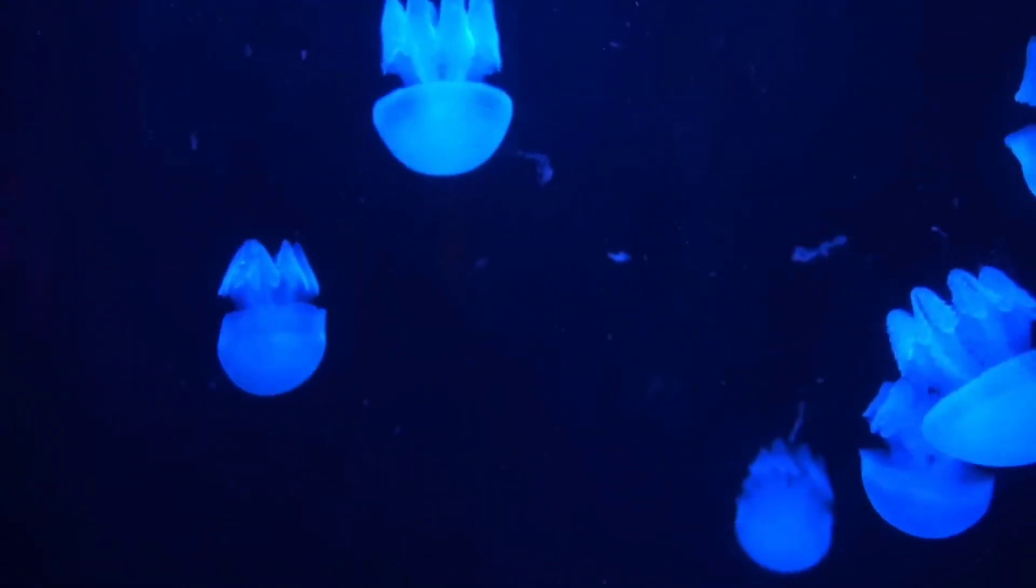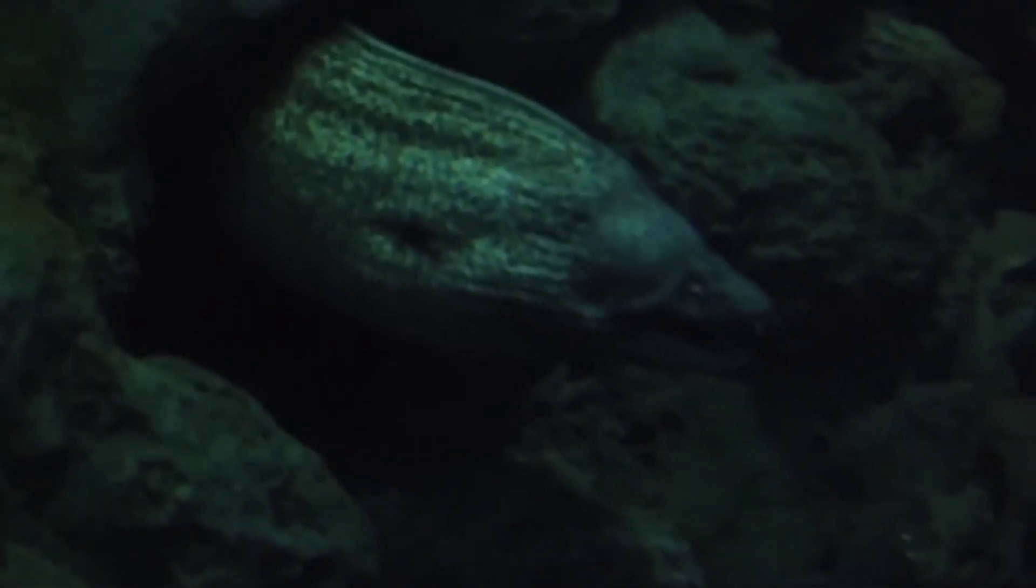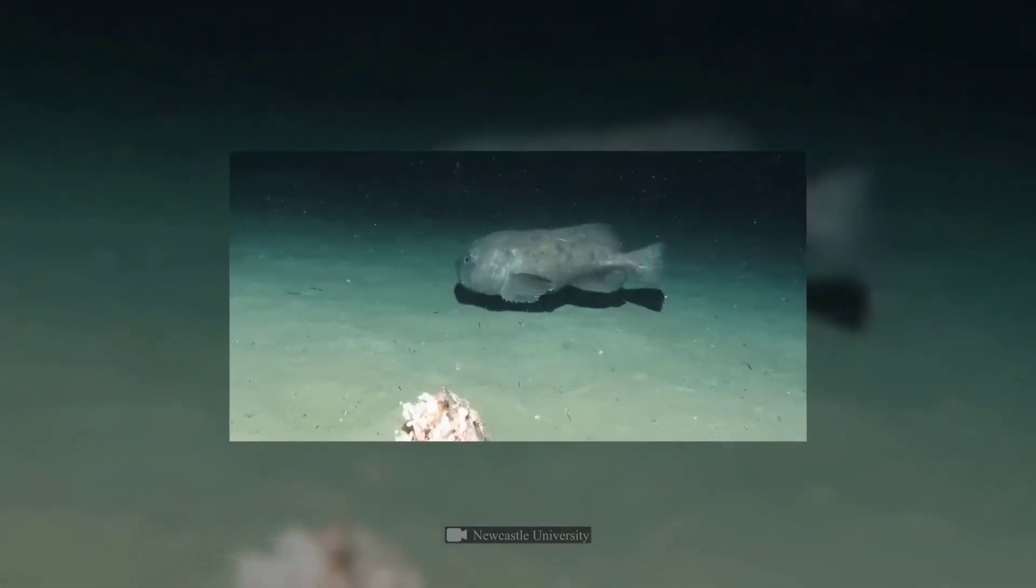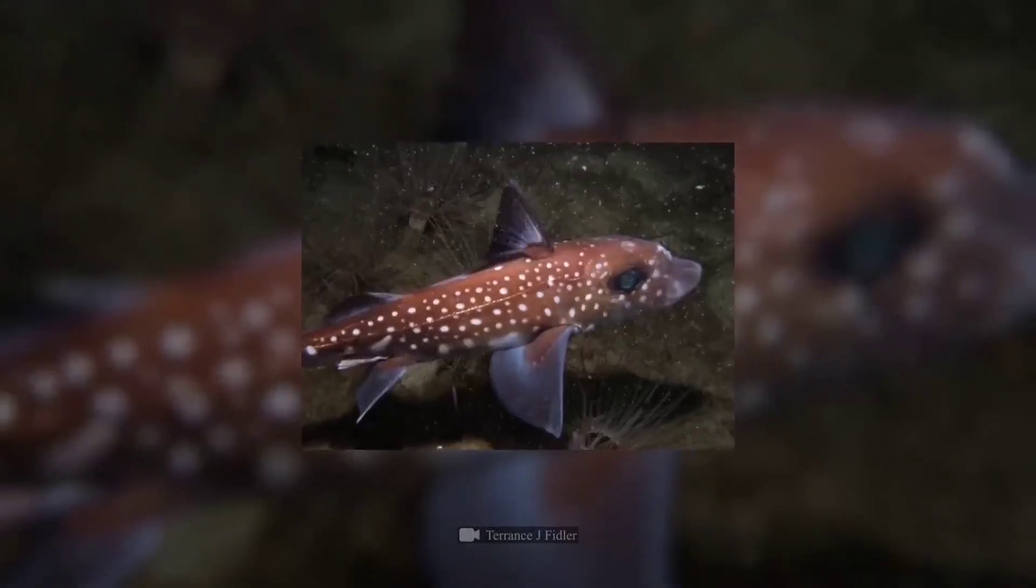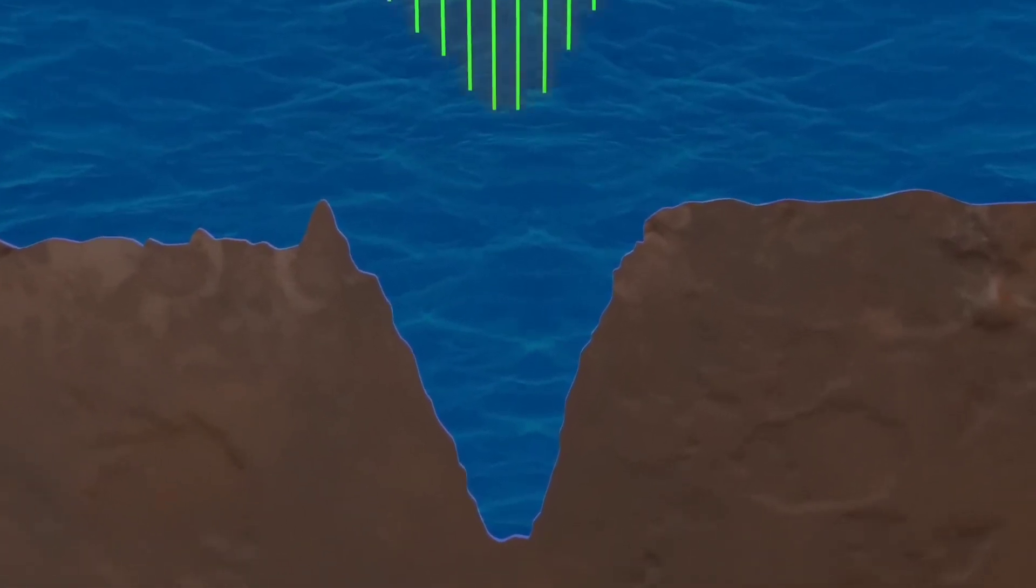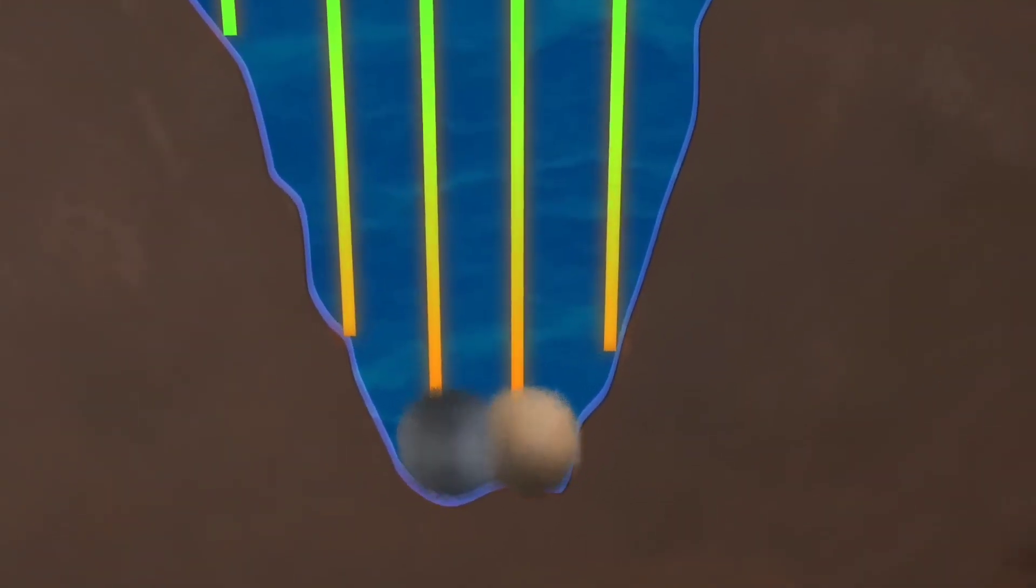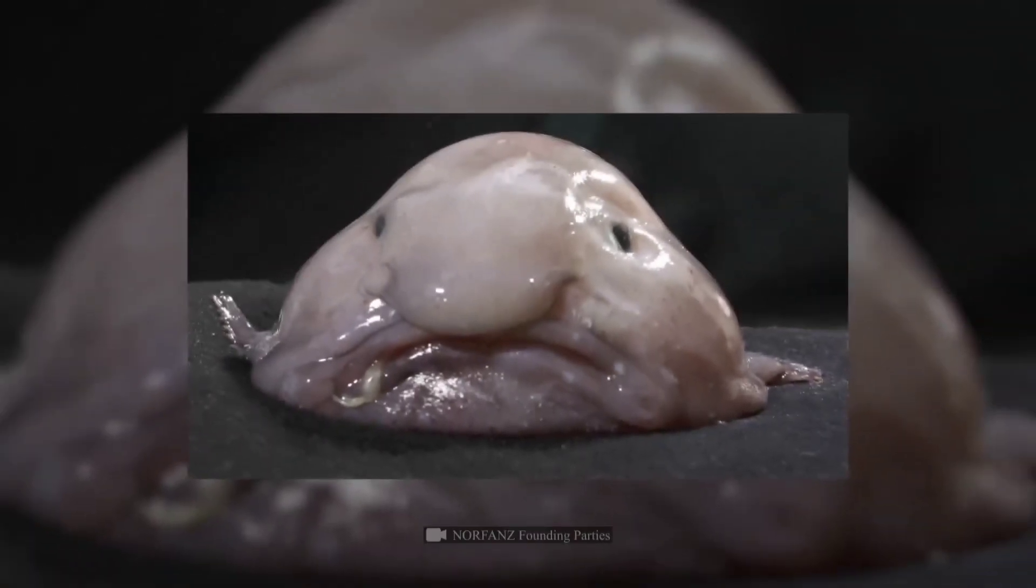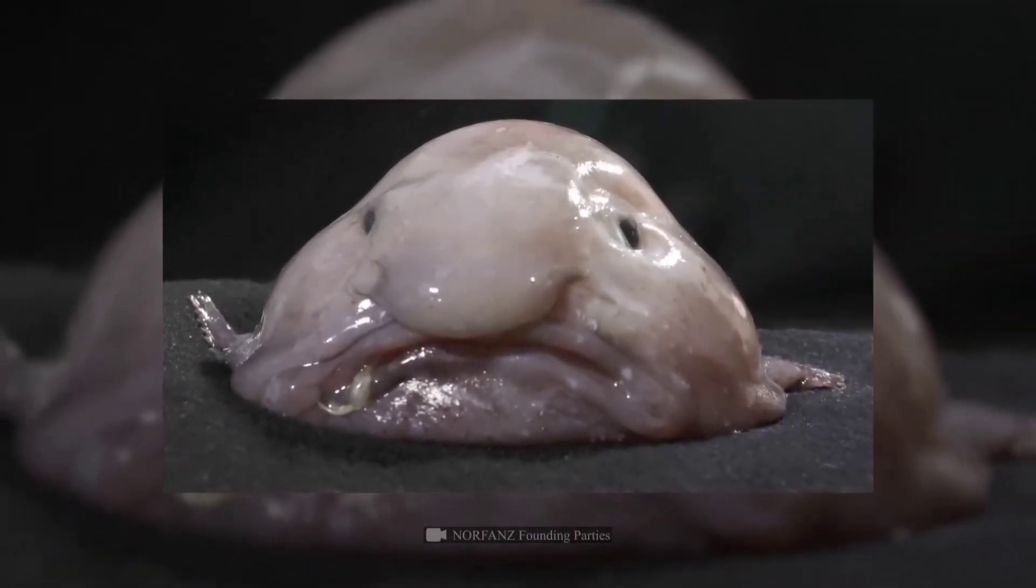Now let's return to the inhabitants of the Mariana Trench of whom I spoke at the beginning. How are they still alive? These organisms, as a rule, don't have rigid bone support. And this characteristic saves their lives. Pressure in the Mariana Trench turns glass and wood to powder. Whereas on the surface, the same creatures can turn into jelly.